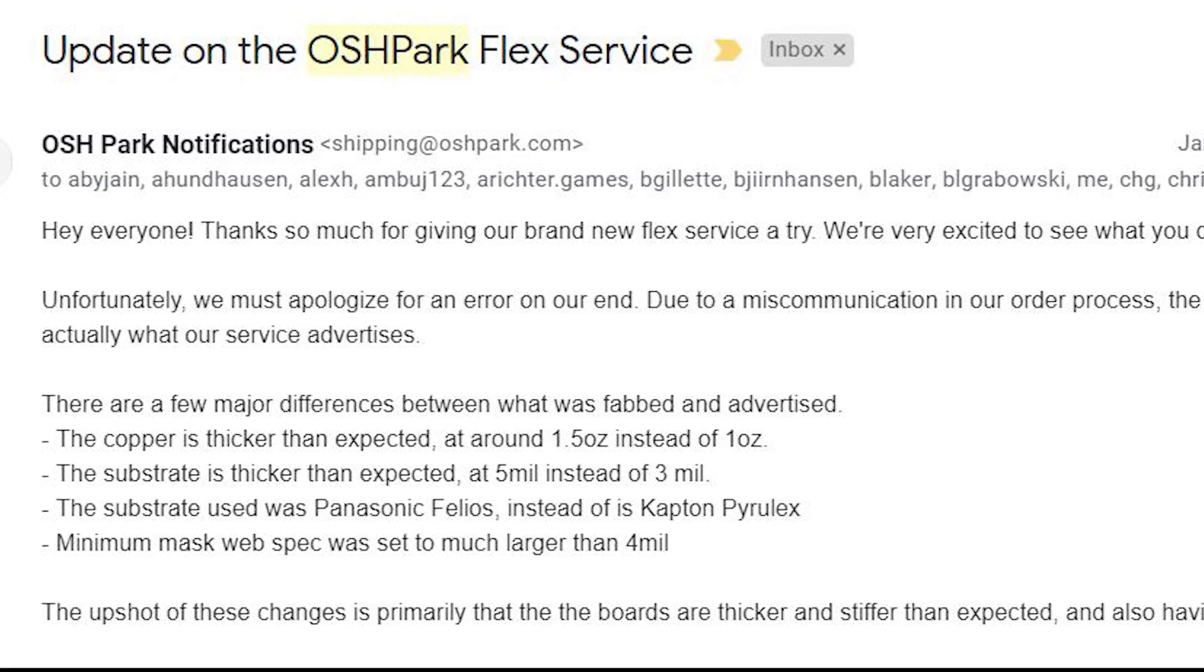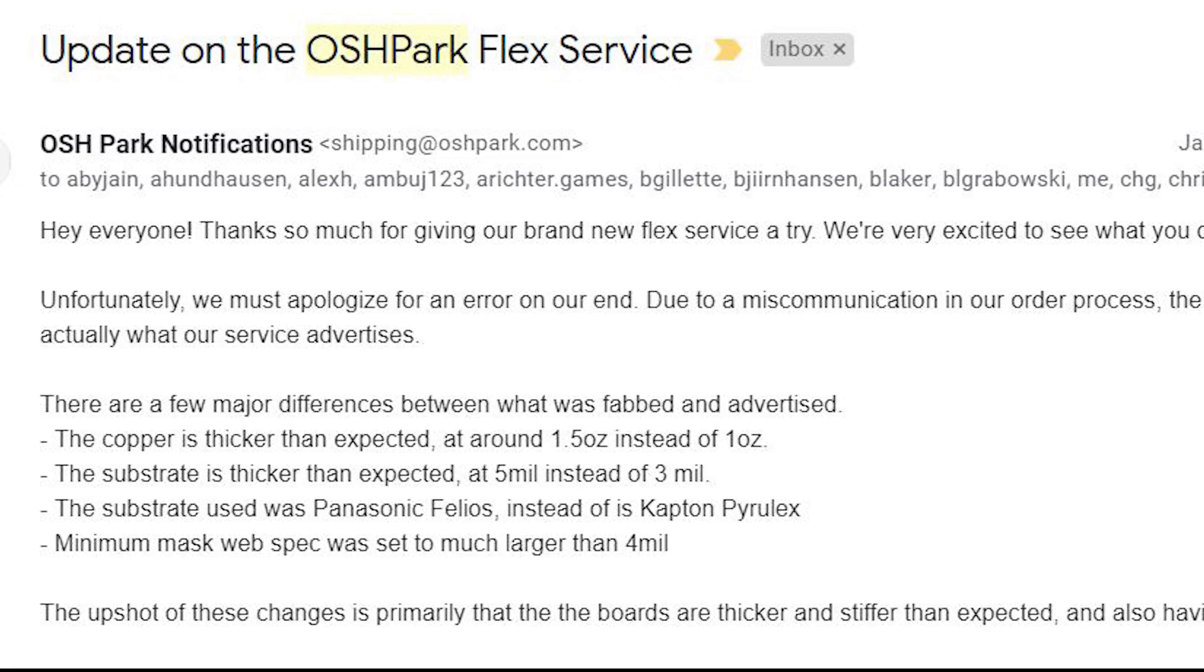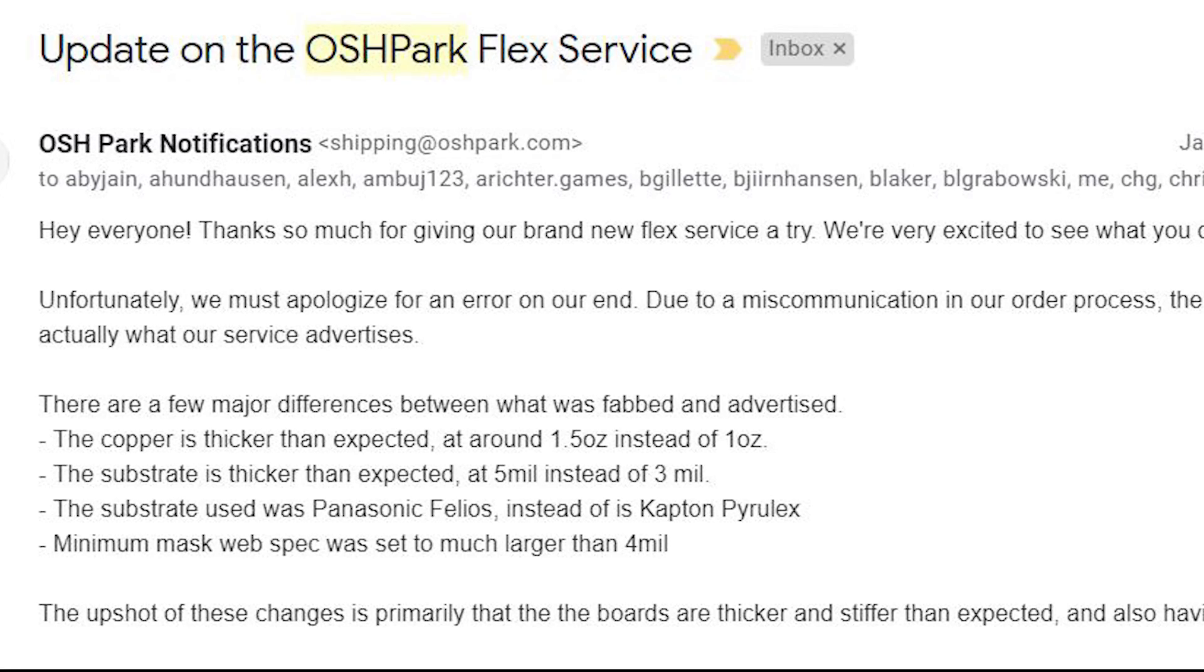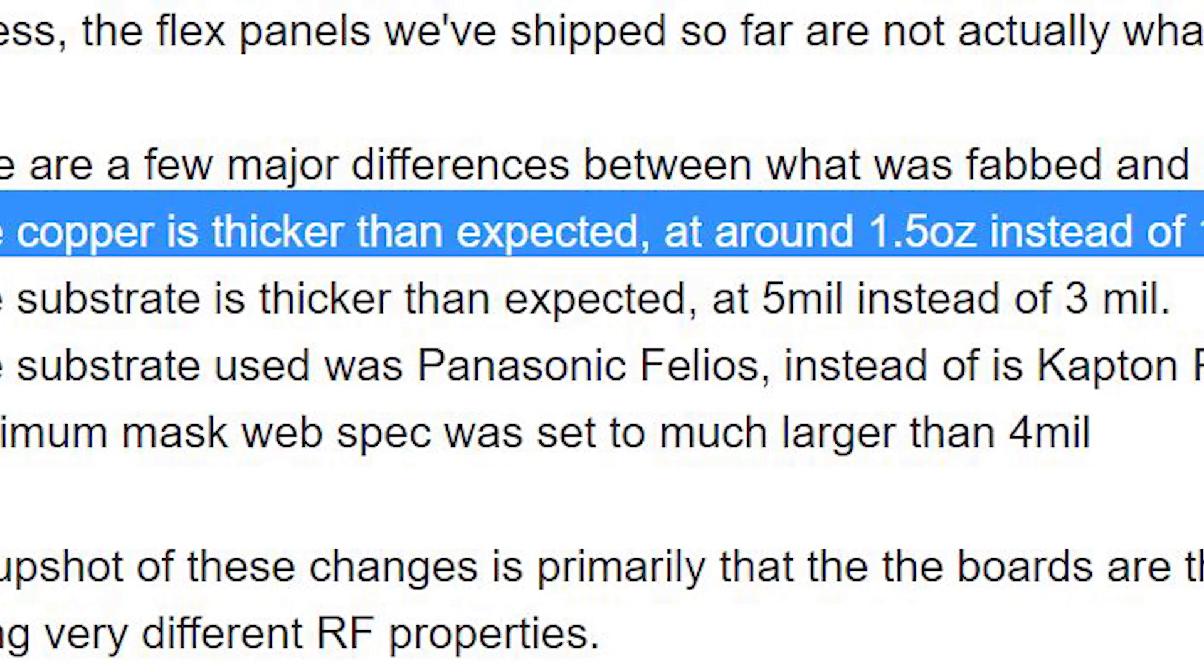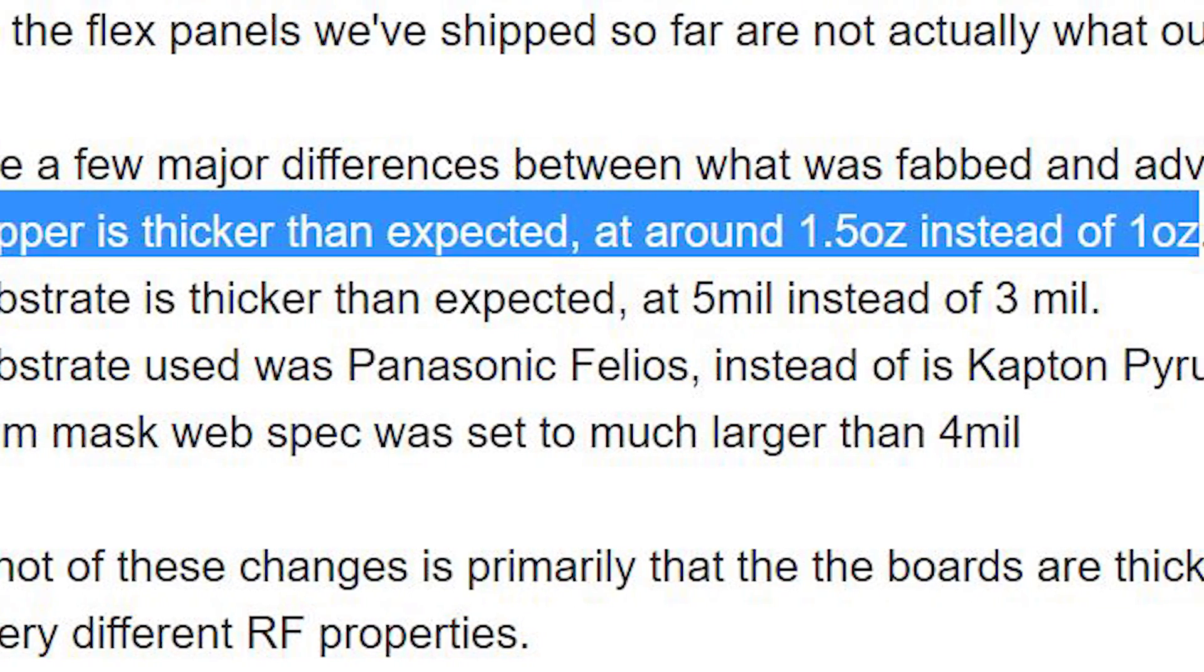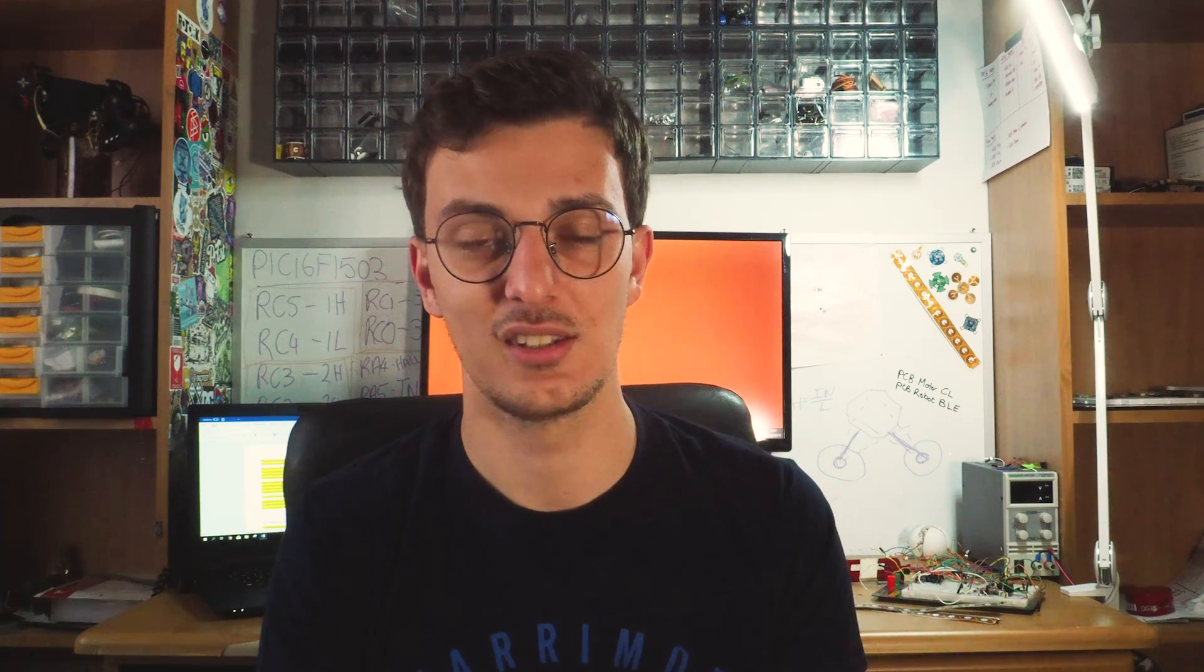After finishing these tests I received an email from OSH Park saying that they had a manufacturing flaw. The copper thickness was set to 1.5 ounces instead of 1 ounce, so this extra thickness in copper may also have helped reducing the resistance of the coil. In this email they have also announced that in the coming days they will be shifting to a different substrate to make their flexible PCBs more flexible.